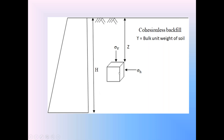Neglect the normal stress in the z-axis direction. Then the soil element is subjected to only normal stresses sigma v and sigma h with no shear stress acting on it. Since the element is in no shear stress condition, these two normal stresses sigma v and sigma h are called principal stresses — sigma v is the major principal stress and sigma h is the minor principal stress.